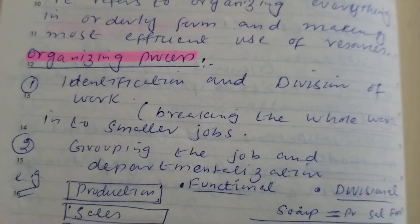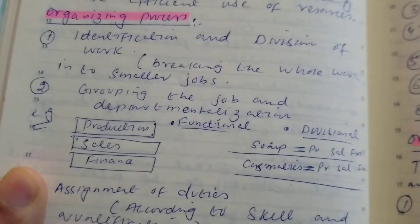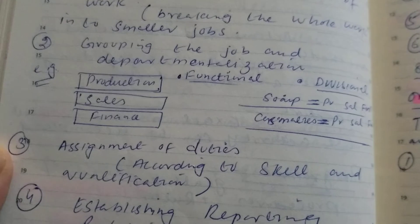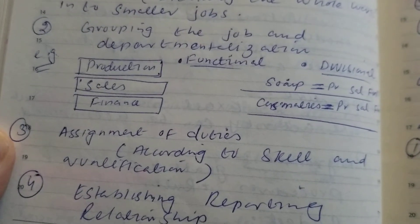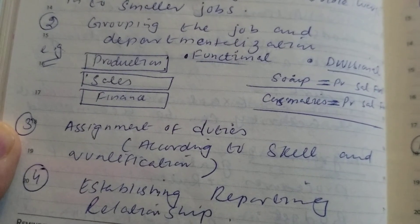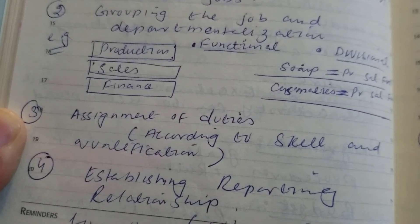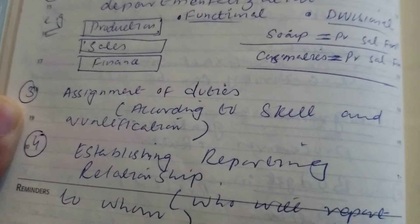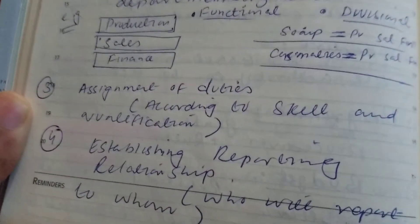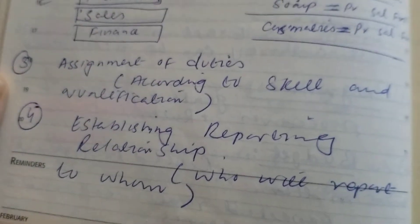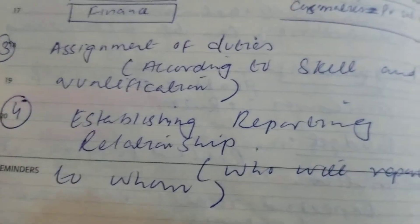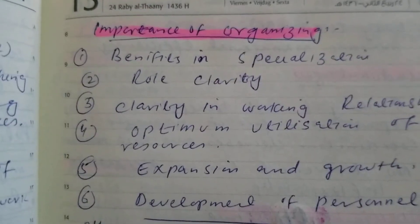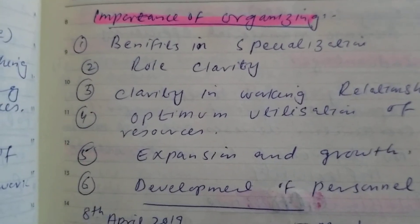Organizing is a process. First is identification and division of work — breaking the whole work into smaller jobs. Second is grouping the jobs and departmentalization, for example functional and divisional — functionals include production, sales, and finance, such as soap and cosmetics. Third is assignment of duties according to skill and qualification.